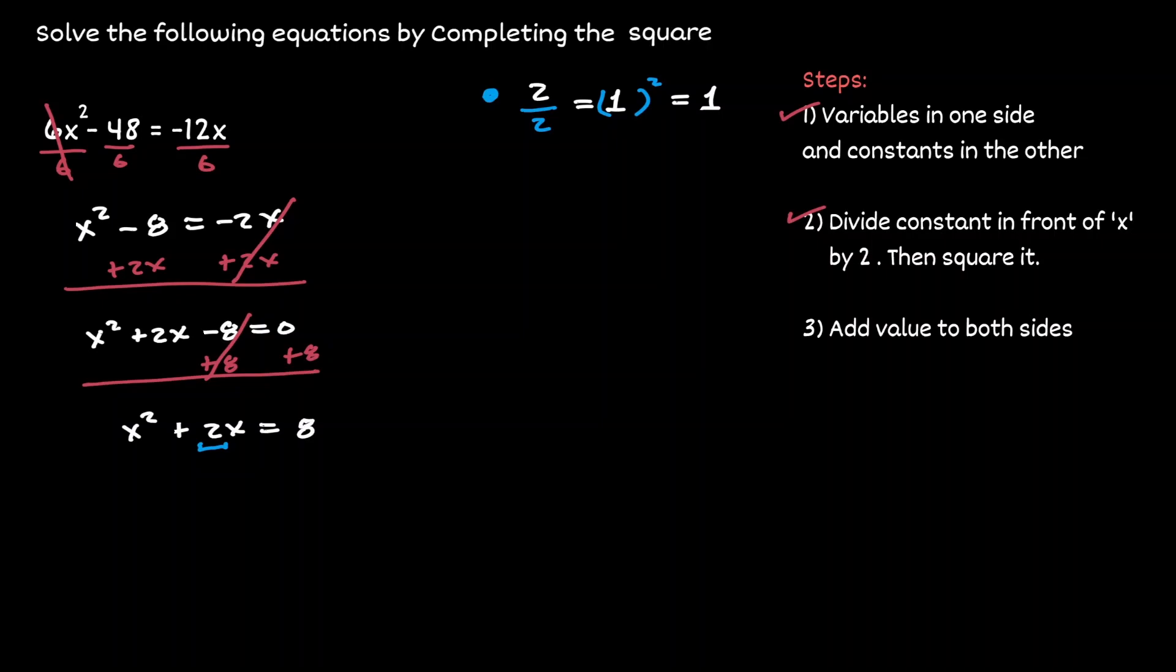Now, the last step, we're going to get this value that we obtained and we're going to add it to both sides of the equation. So on the left hand side, we're going to get x squared plus 2x plus 1. And on the right hand side, we're going to get 8 plus 1 as well. And we are done with the procedure of completing the square.